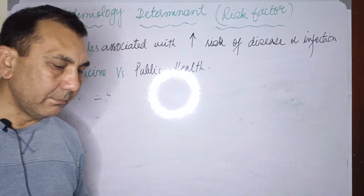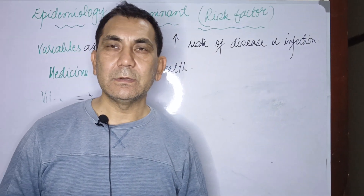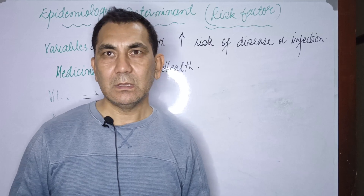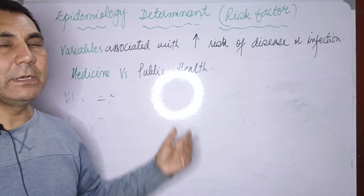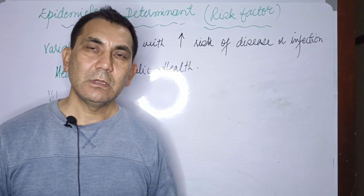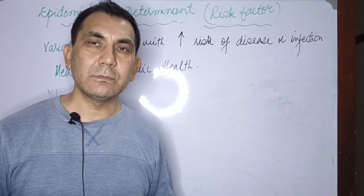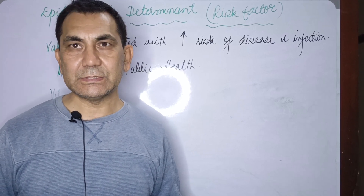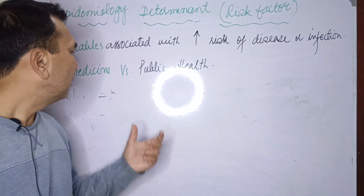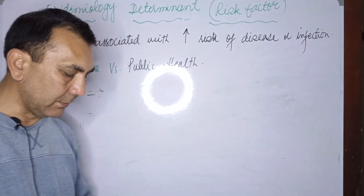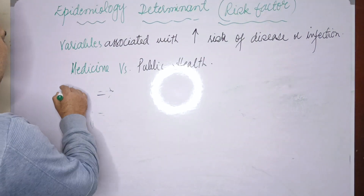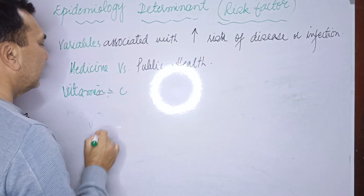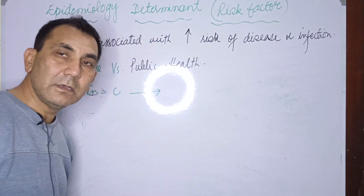In medicine, clinicians use the word 'cause' for the cause of disease. But in public health and epidemiology, the most suitable terms used are 'risk factor' or 'determinants' of disease.